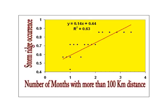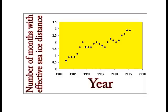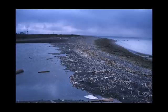After measuring the mean monthly sea ice distance from the catchment and performing regression analysis, it was concluded that there is a direct relation between the number of months with effective sea ice distance from December to March and storm ridge occurrence. More months with effective sea ice distance results in more storm ridge occurrence, meaning ridges are formed within a few months. The data shows an increase of effective sea ice distance during the past decades, meaning storm ridge occurrence will become a normal phenomenon within a few years.